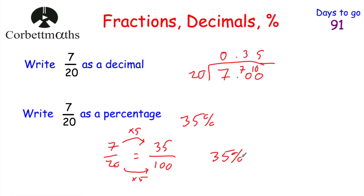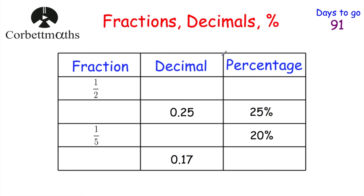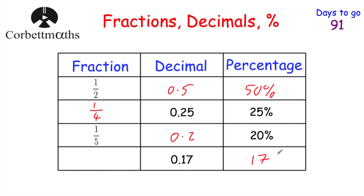We've now covered all conversions: fractions to decimals, fractions to percentages, decimals to fractions, decimals to percentages, percentages to fractions, and percentages to decimals. Here's a table question to try yourself. A half is 0.5 and 50%. The row with 0.25 or 25% — that's a quarter. A fifth is 20% or 0.2. And 0.17 multiplied by 100 gives 17%, and as a fraction it's 17 hundredths, written as 17 over 100.